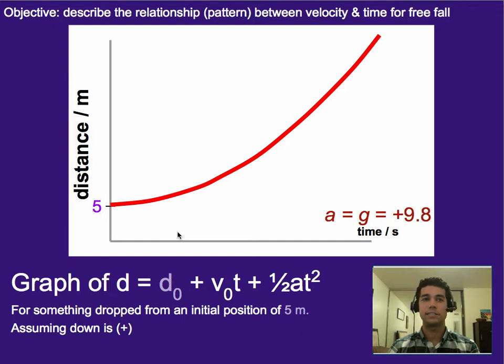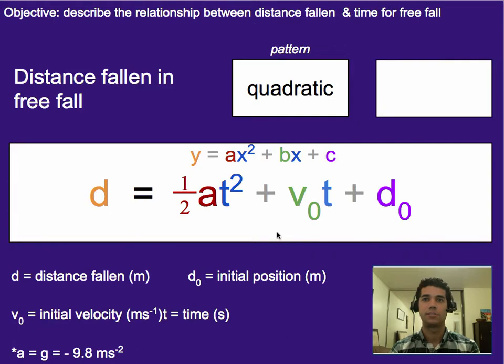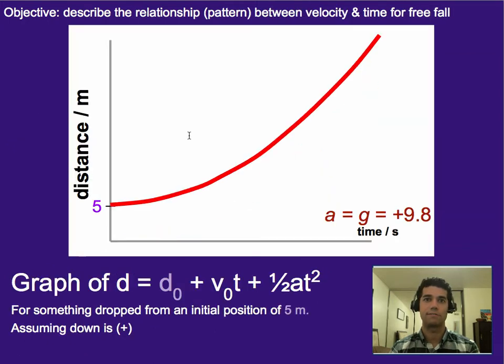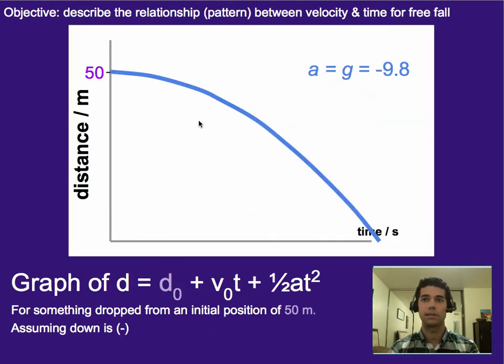However, if we instead started with an initial position of 50 meters but then made gravity negative, then what it would do is it would shift the graph up to here, and then it would flip it upside down because this value or coefficient would now be a negative and that would kind of flip the direction of the graph. So if you assume gravity is a negative value, then you get a downward facing parabola. If you assume gravity is a positive value, then you get an upward facing parabola. And the d₀ term just determines how much it shifted up or down.